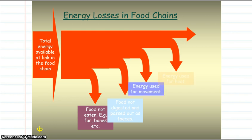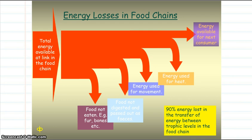Energy used for movement. Energy used to generate body heat. And only that much energy would be available for the next consumer in the food chain. Overall, about 90% of the energy is lost in a transfer of energy between trophic levels in a food chain.